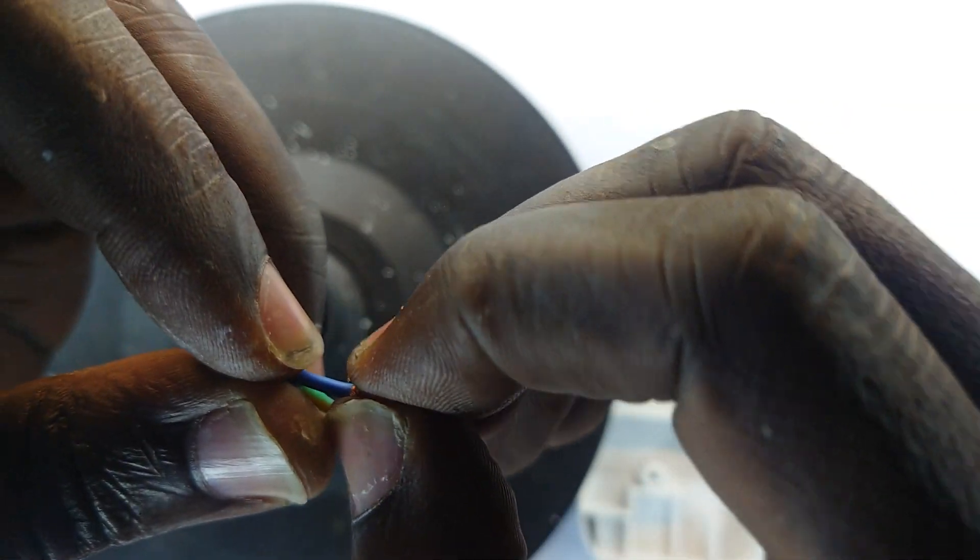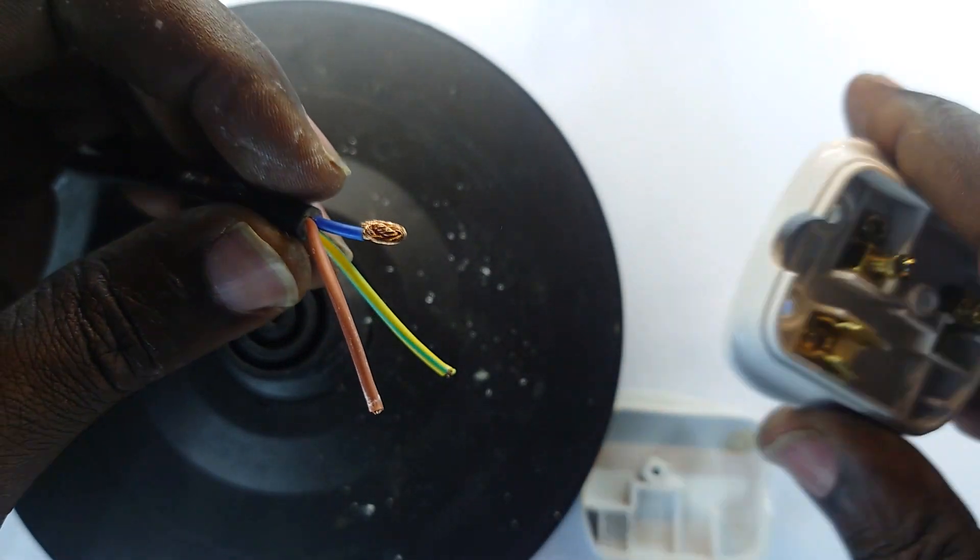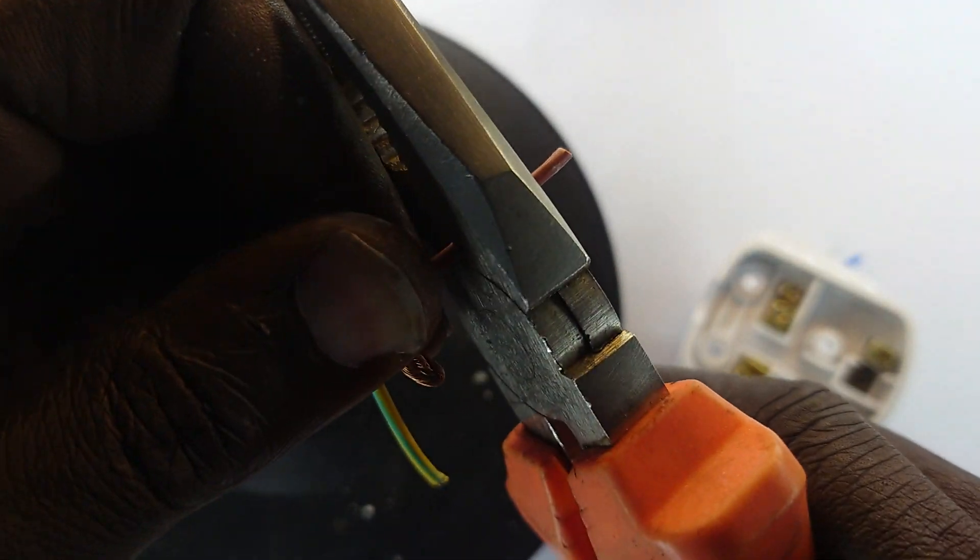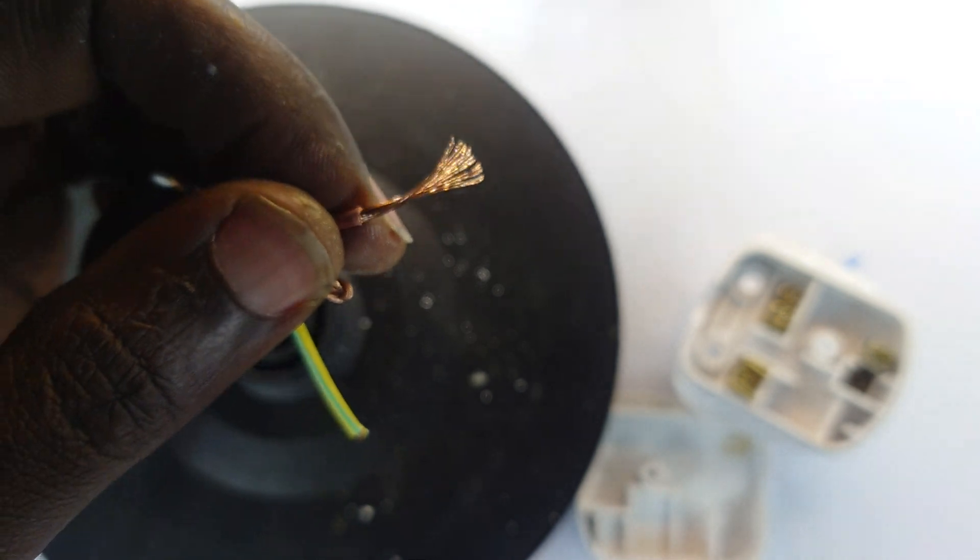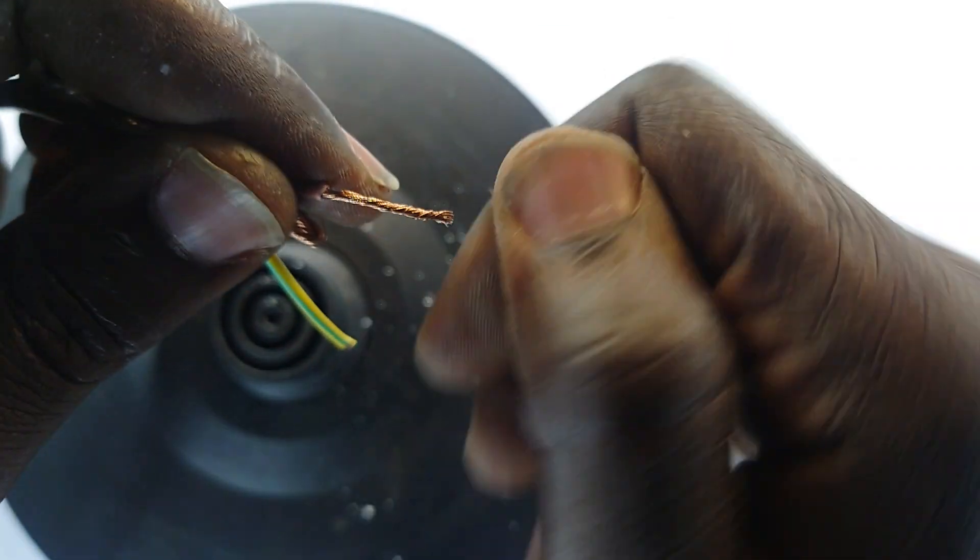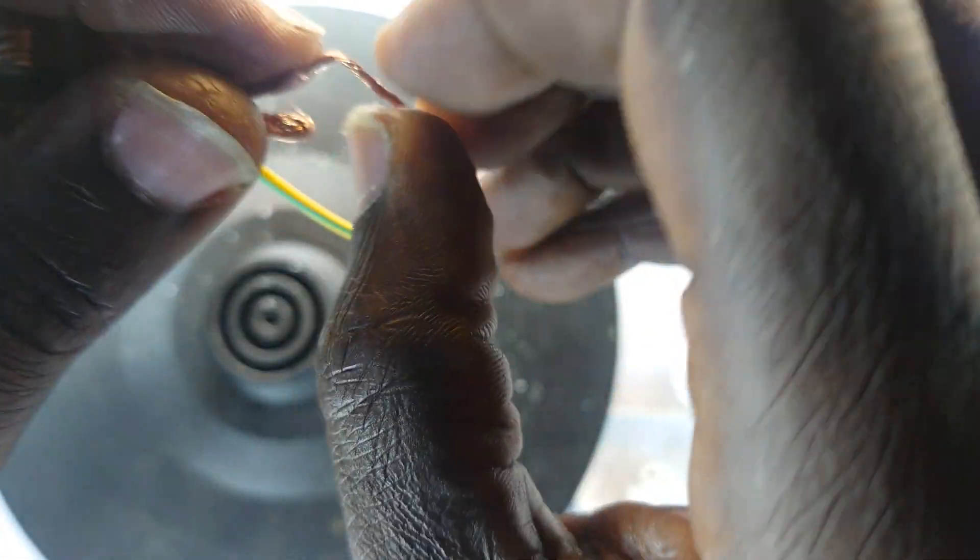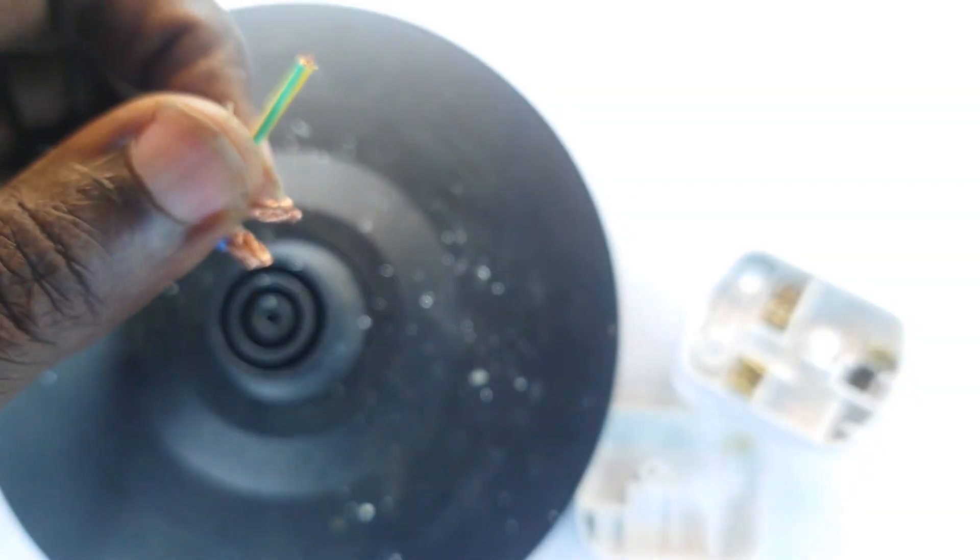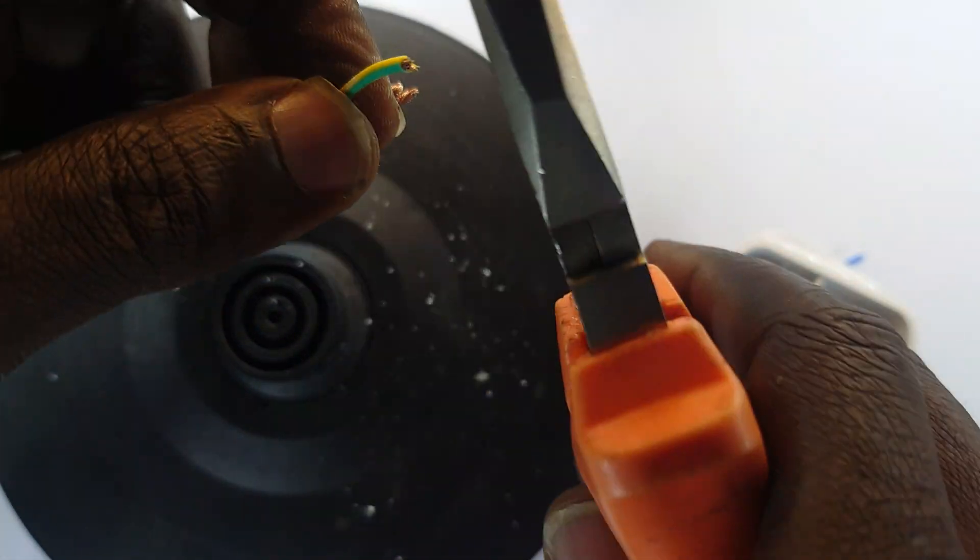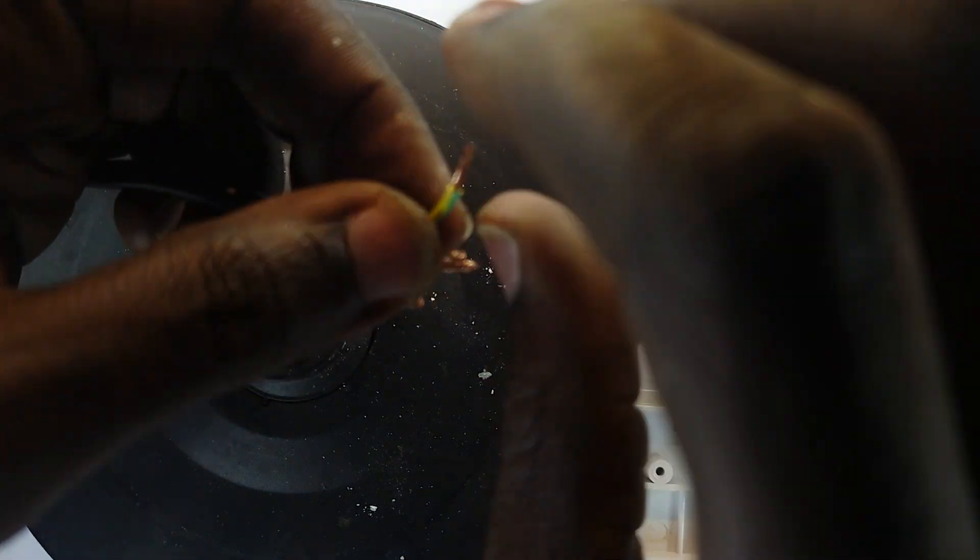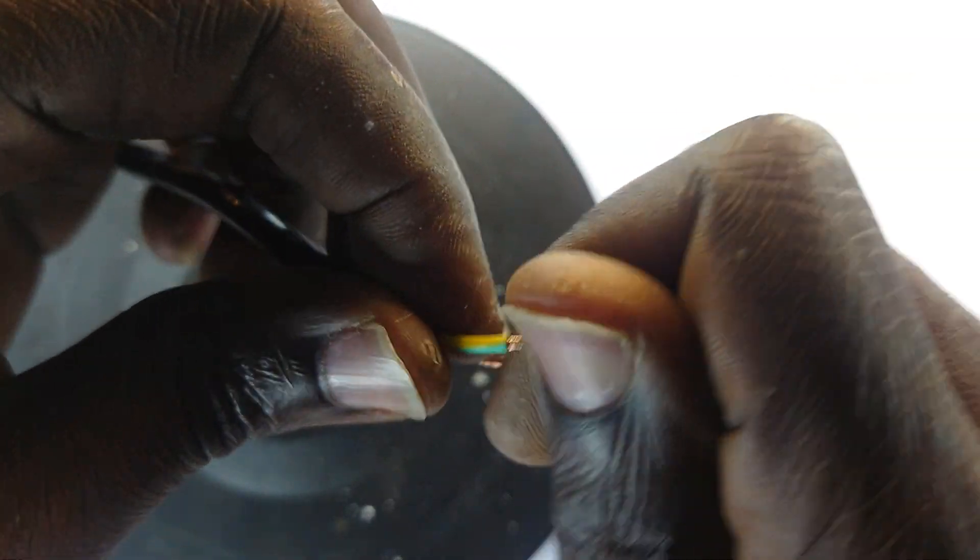And then finally we expose the earth wire. This is to protect against live touching the body. So this terminal, when you're inside, the one to the left is the neutral. So push that in.